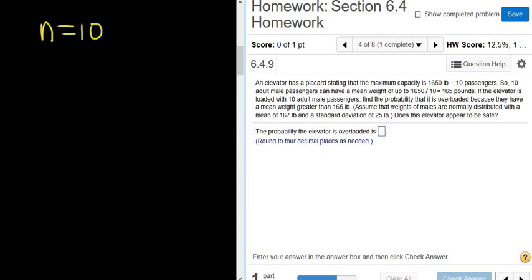Find the probability. So it's a probability, so I'll go ahead and write P, and a parenthesis, that it is overloaded because they have a mean weight, that's x-bar, greater than 165. So you just read it very carefully. If the elevator is loaded with 10 adult male passengers, that's your 10, find the probability that it is overloaded, that's a probability, because they have a mean weight, that's x-bar, greater than 165.